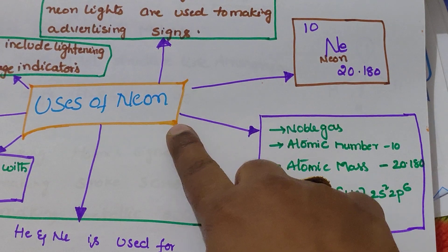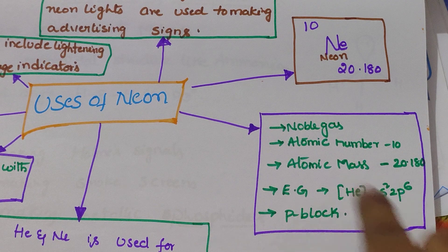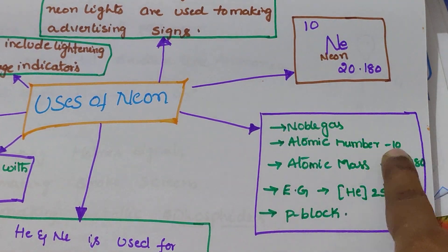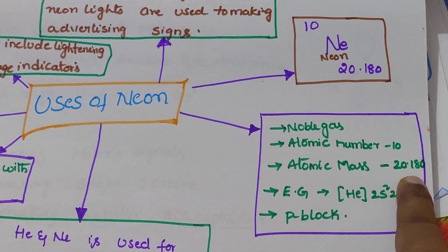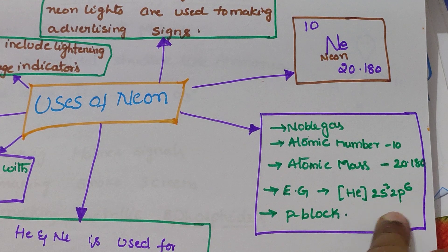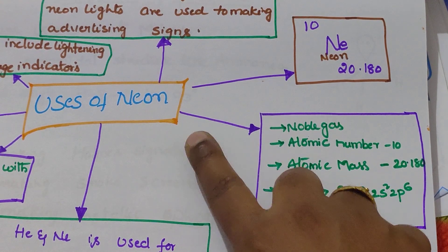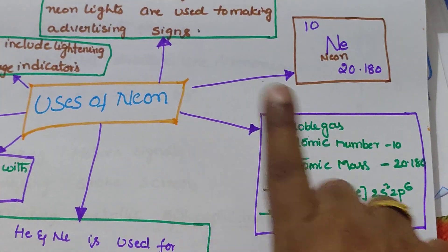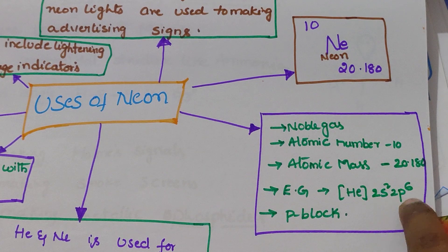Neon belongs to the p-block element. It is a noble gas, atomic number is 10, and atomic mass is 20.180. Electronic configuration is helium 2s2 2p6, with the valency shell containing 8 electrons. So it is a stable element because it has an octet — 8 electrons in the valency shell.